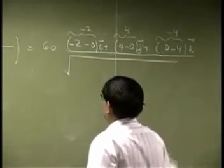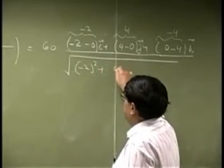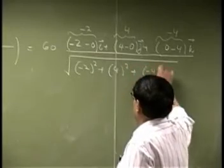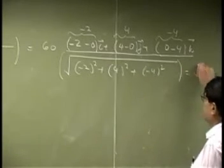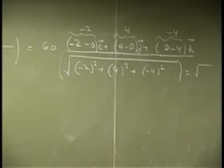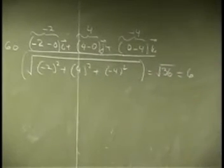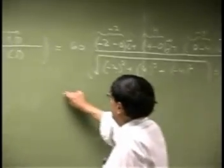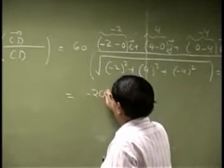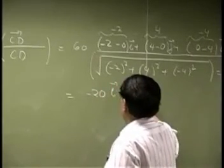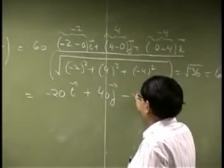The next thing you can do is find the length. That's going to be negative 2 squared, 4 squared, and negative 4 squared. The bottom part of the equation will change to 16 plus 16 and 32 plus 4 is going to be 6.